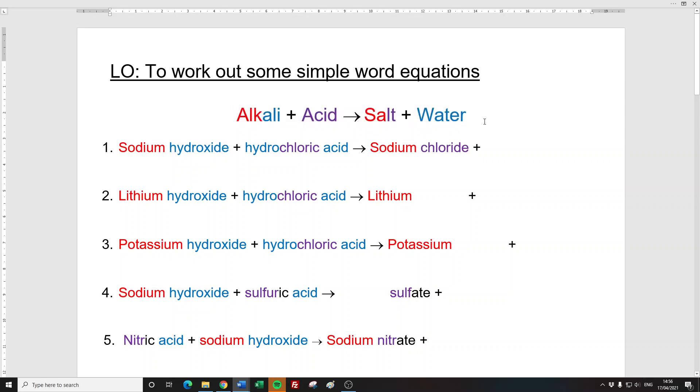They turn into some sort of salt and some sort of water. So let's have a look. I've color coded these just to make them easier to understand. So the first one is sodium hydroxide. Now that's an alkali, without doubt, because it's got this word hydroxide there. Hydrochloric acid, that's an acid because it's got the word acid there.